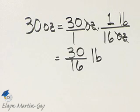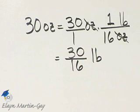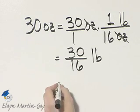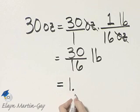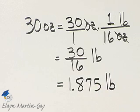Now go off to the side. You can either simplify this fraction first. Notice 30 and 16 have a common factor of 2, so you can write that as 15 over 8, and then divide 8 into 15, or you can divide 16 into 30. Either way, you'll have 1 decimal point 875 pounds.